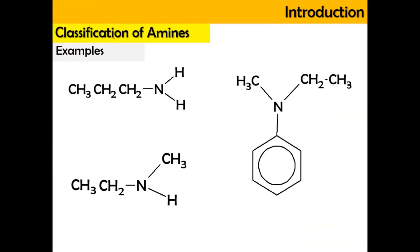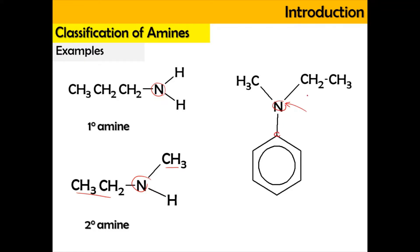Now let's look at the classification of amines focusing on examples. For this structure, the nitrogen is attached with one alkyl group, so it's going to be a primary amine. Below here, the nitrogen is attached with two alkyl groups, so it's going to be a secondary amine. Meanwhile, for this one, the nitrogen is attached with one, two, and three alkyl groups, and hence it's going to be a tertiary amine.